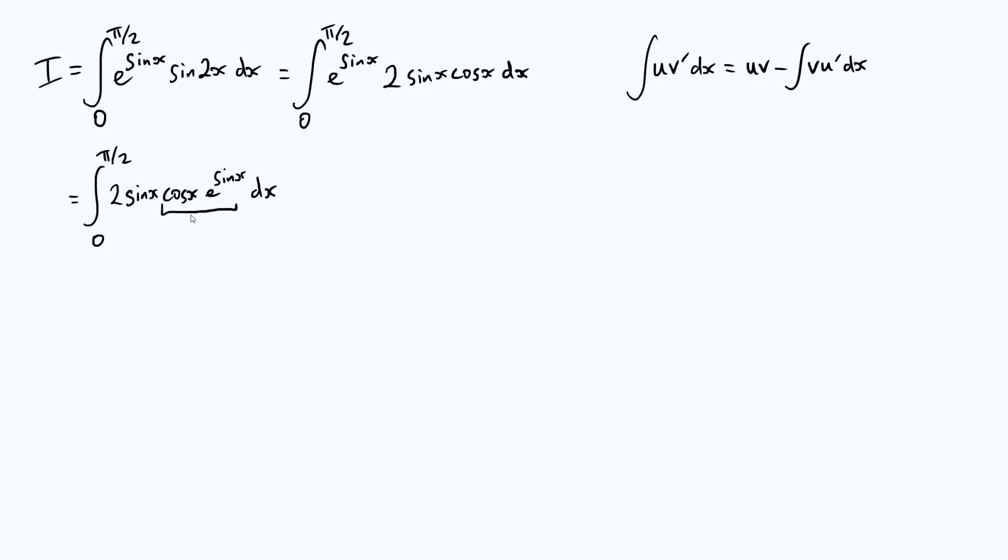So we have here something that very much looks like it fits this form, because we have the derivative of a function here. And so we could choose this to be our v prime in our integration by parts formula, and we could choose this sine x to be u. We could include this two, it doesn't really matter. We could just think of it as a pre-factor. So let's do some integration by parts.